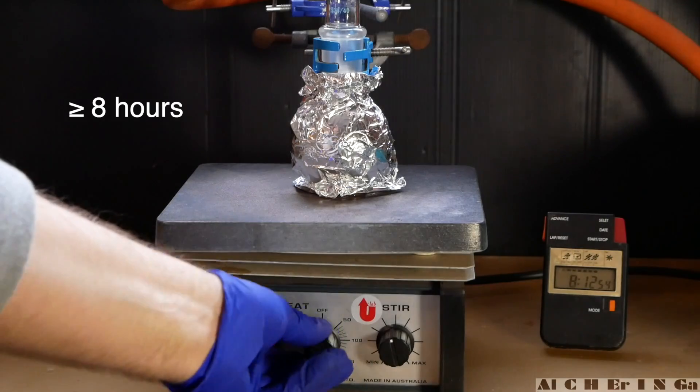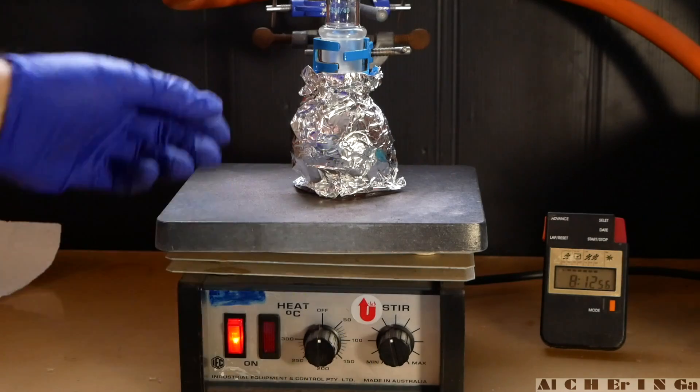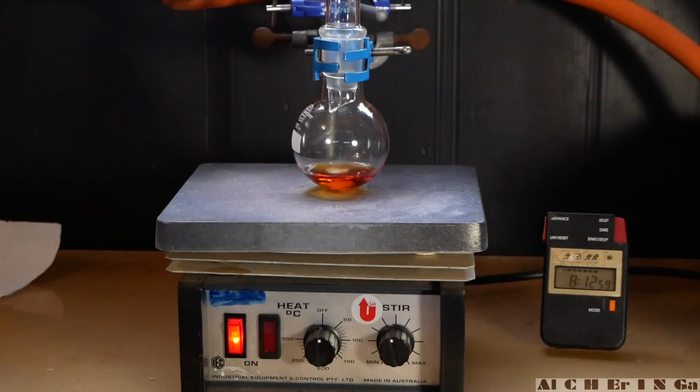After 8 hours, turn the heating off and remove the aluminium wrapped around the flask. As we can see, the mixture has taken a red-orange color.